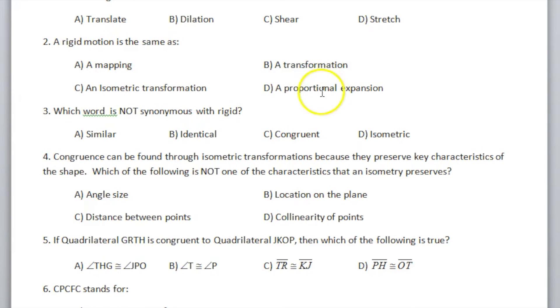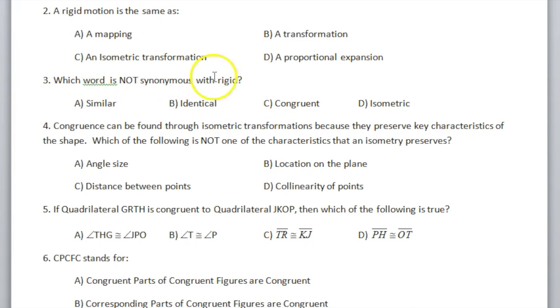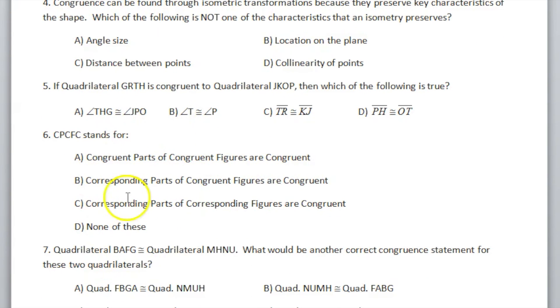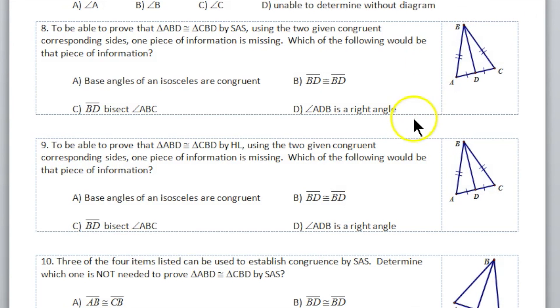And it leads to questions like this, where you're given some information and says which piece of information would make it congruent by side-angle-side, or make it congruent by HL, or so again,